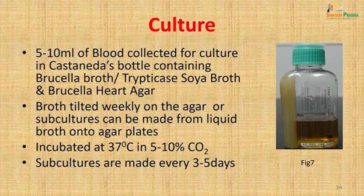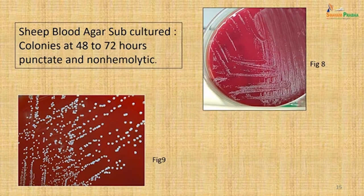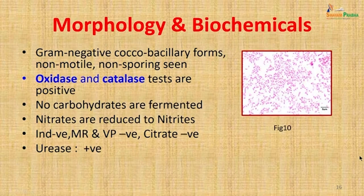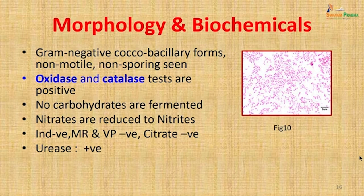When colonies were seen on the agar slope, subcultures were attempted onto different media. On sheep blood agar, subcultured colonies at 48–72 hours were punctate and non-hemolytic. A smear from these colonies showed the organism was gram-negative, coccobacillary, non-motile, and non-sporing. It was oxidase and catalase positive. No carbohydrates were fermented, nitrates were reduced to nitrites, indole was negative, MR and VP were negative, citrate was negative, but urease was positive.